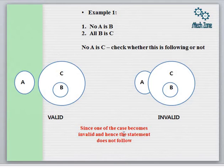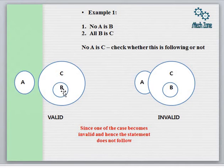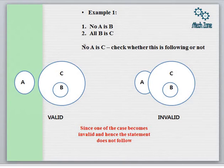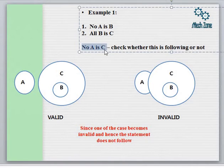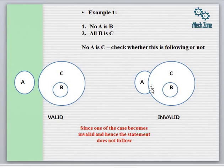So the answer here is that since one of the cases becomes invalid, the statement does not follow. No A is B means A and B are two different identities with nothing in common. All B is C means B is entirely inside C. The statements No A is B and All B is C are valid, but the conclusion No A is C is invalid in one possible case, and hence the entire situation becomes invalid. This example was asked in one of the competitive examinations.